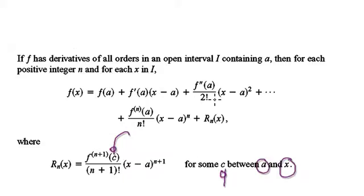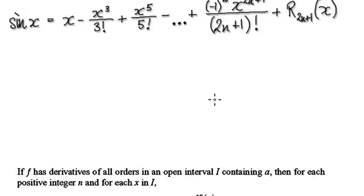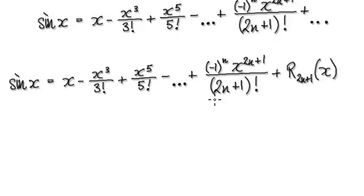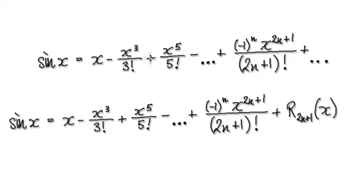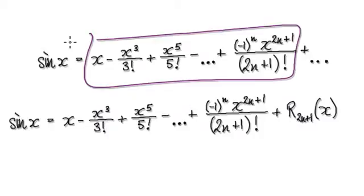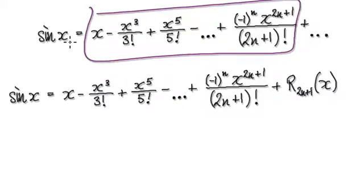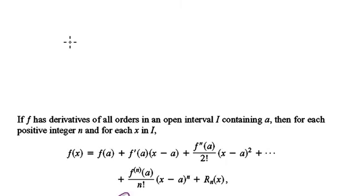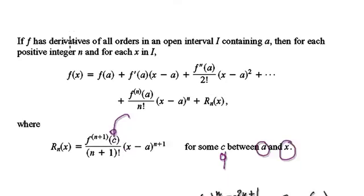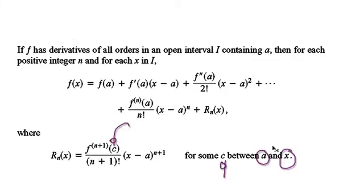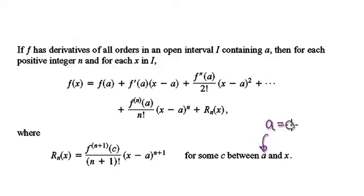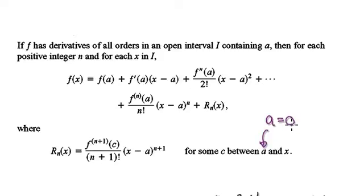Because our series is a Maclaurin series — it is centered at 0 — this a here is equal to 0.